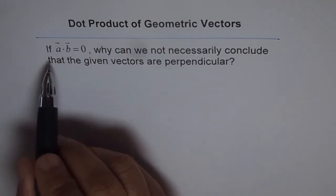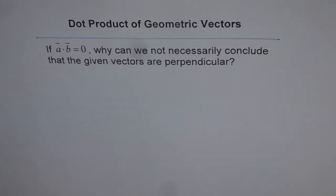Dot product. If A dot B equals 0, why can we not necessarily conclude that the given vectors are perpendicular?